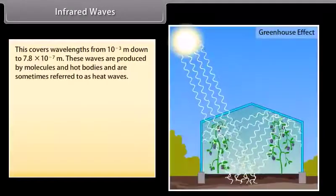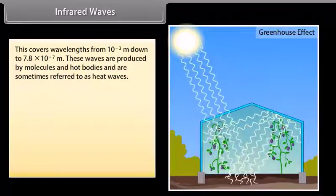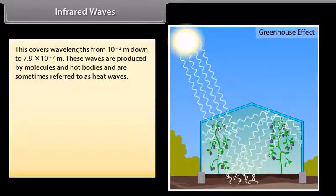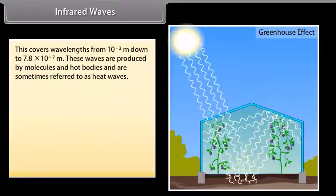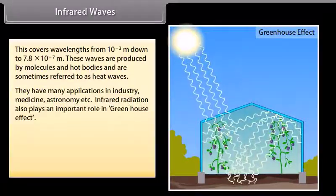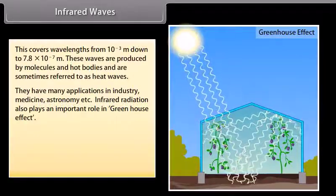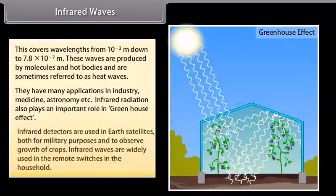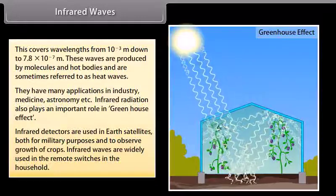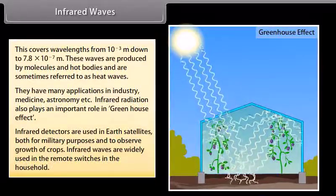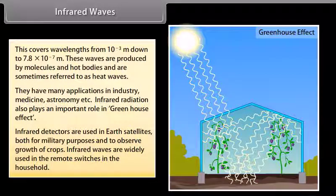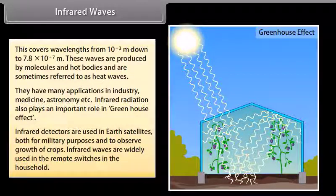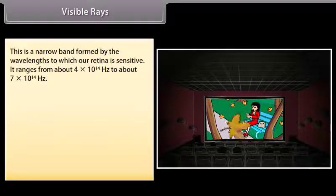Infrared waves. This covers wavelengths from 10 raised to the power minus 3 meter down to 7.8 into 10 raised to the power minus 7 meter. These waves are produced by molecules and hot bodies and are sometimes referred to as heat waves. They have many applications in industry, medicine, astronomy, etc. Infrared radiation also plays an important role in greenhouse effect. Infrared detectors are used in Earth satellites both for military purposes and to observe growth of crops. Infrared waves are widely used in the remote switches in the household.